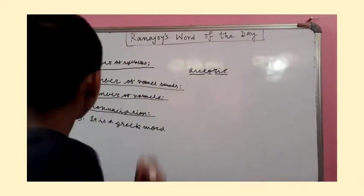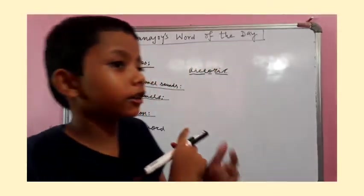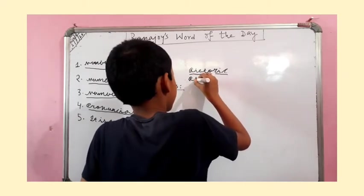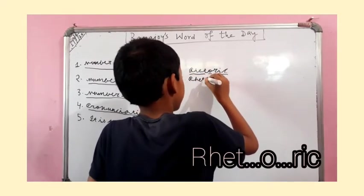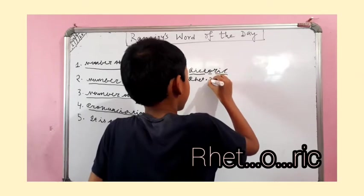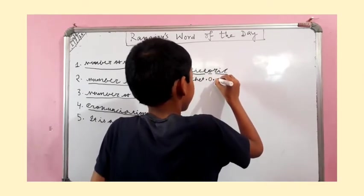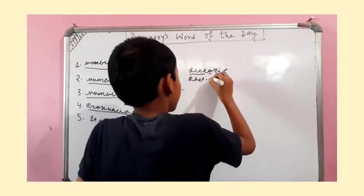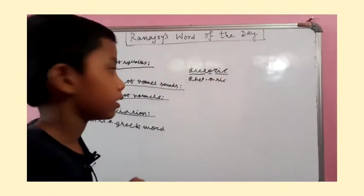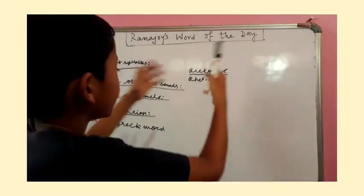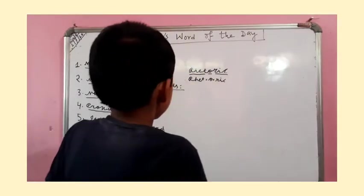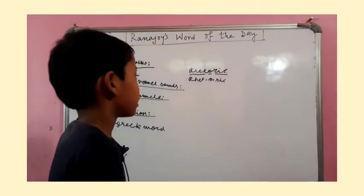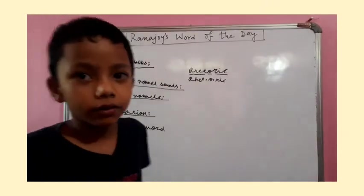Rhetoric. Now let's break the word into three pieces. Rhetoric — here we break it up into three pieces. So, there are three syllables. There are three syllables in Rhetoric.